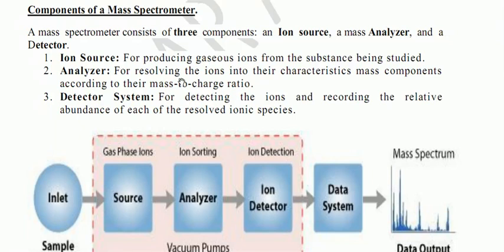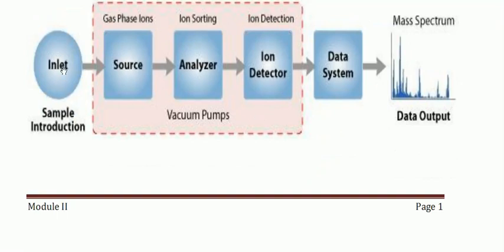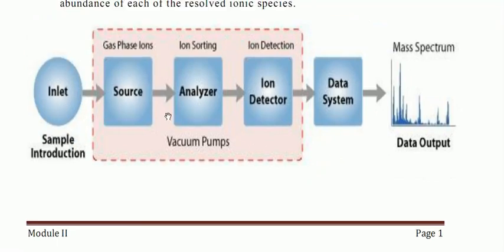The detector system is responsible for detecting the ions and recording the relative abundance of each of the resolved ion species. So the three components are: ion source, analyzer, and ion detector.